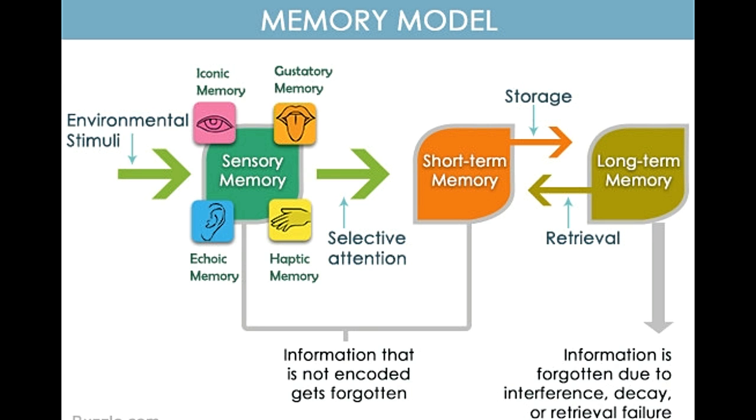Sensory memory, short-term memory, and long-term memory differ from each other when it comes to the duration, capacity, and function. Sensory memory has a large capacity for information, but it has a brief duration. The short-term memory and long-term memory have limited and unlimited capacity respectively. While the duration of sensory memory ranges up to 4 seconds, the duration of the short-term memory is about 20-30 seconds. The information can be stored in long-term memory indefinitely.